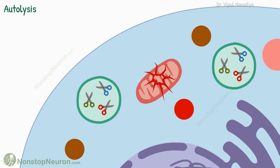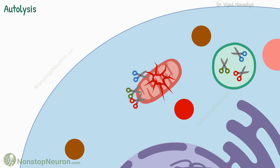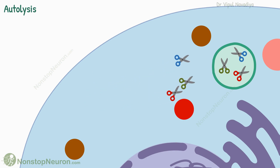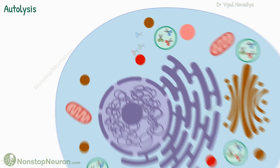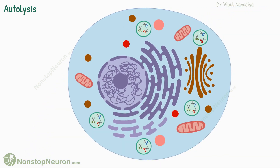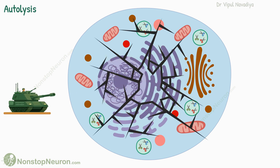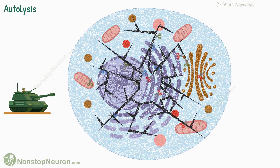In such cases, the lysosomes rupture and the released enzymes start digesting damaged structures. If the damage is limited, only the damaged portion is removed and the cell is repaired. However, if the damage is widespread or severe, the entire cell is digested.